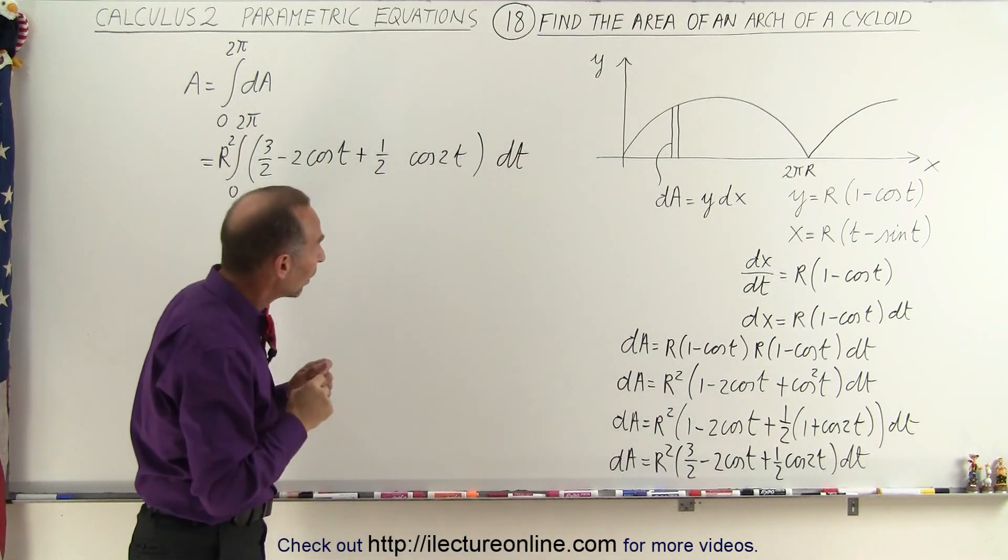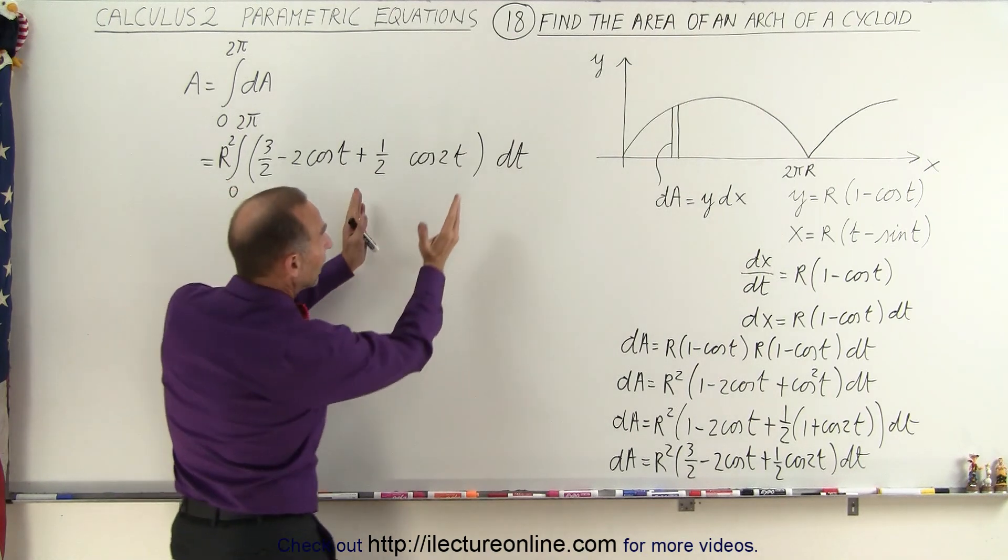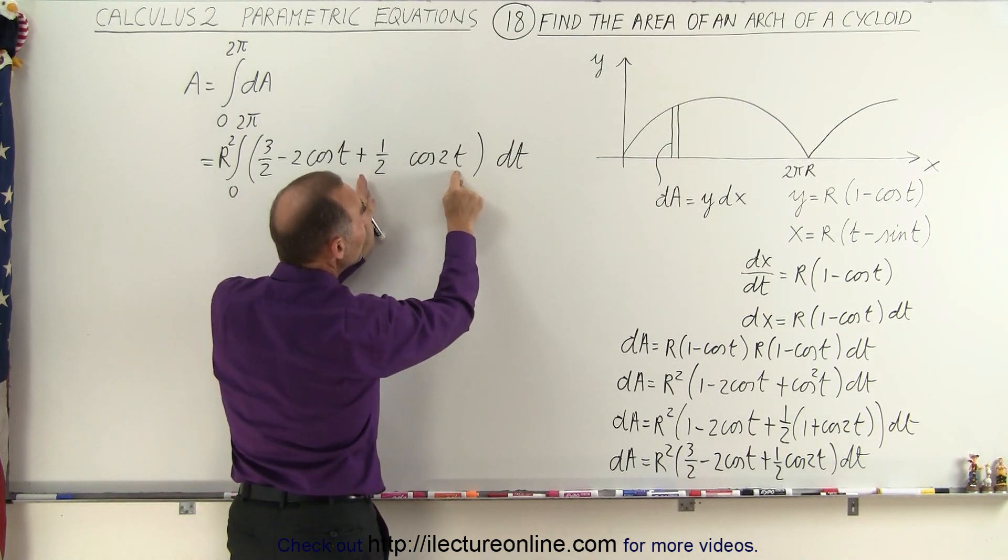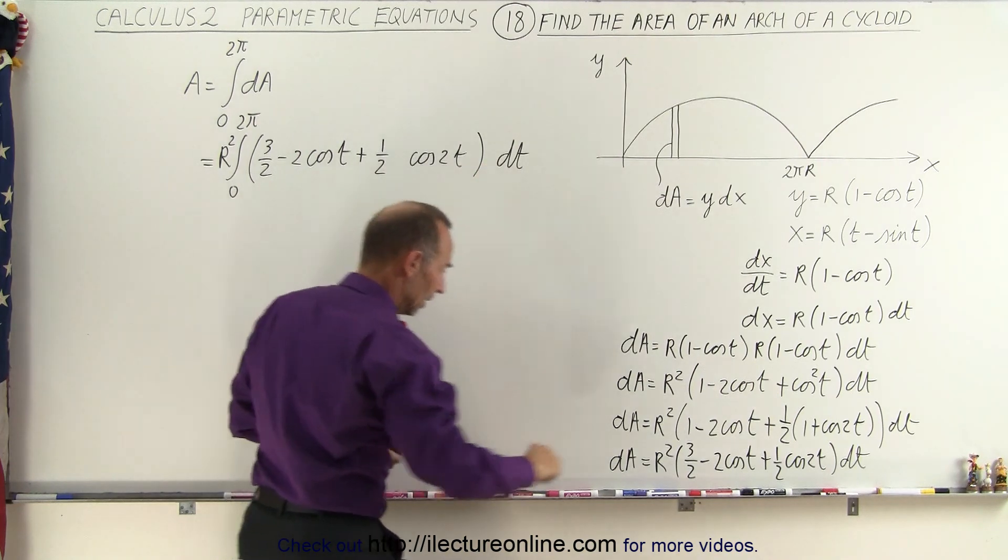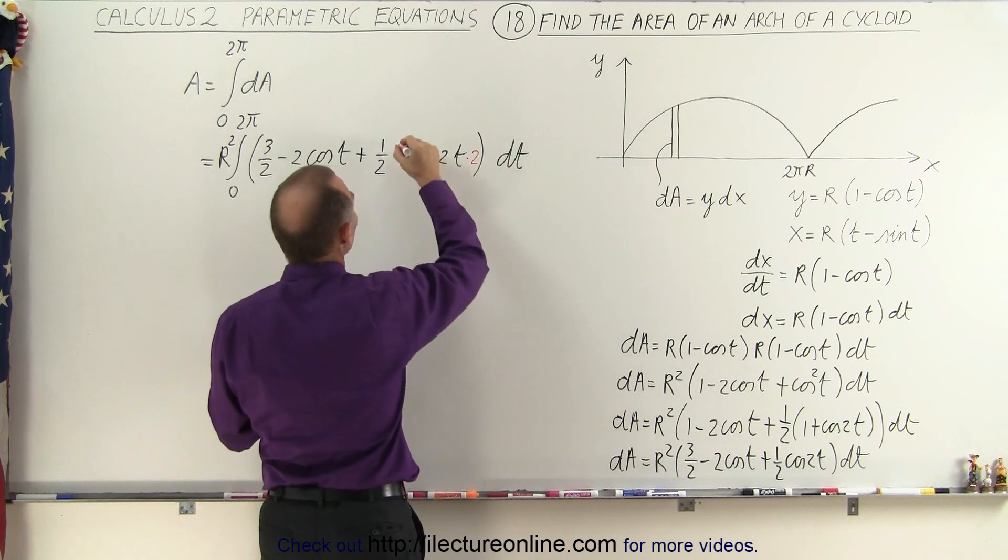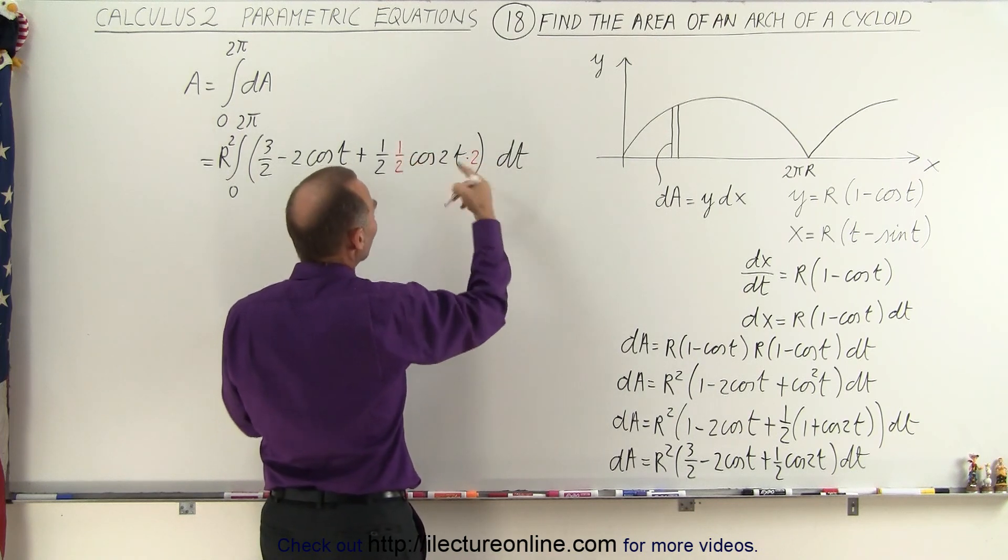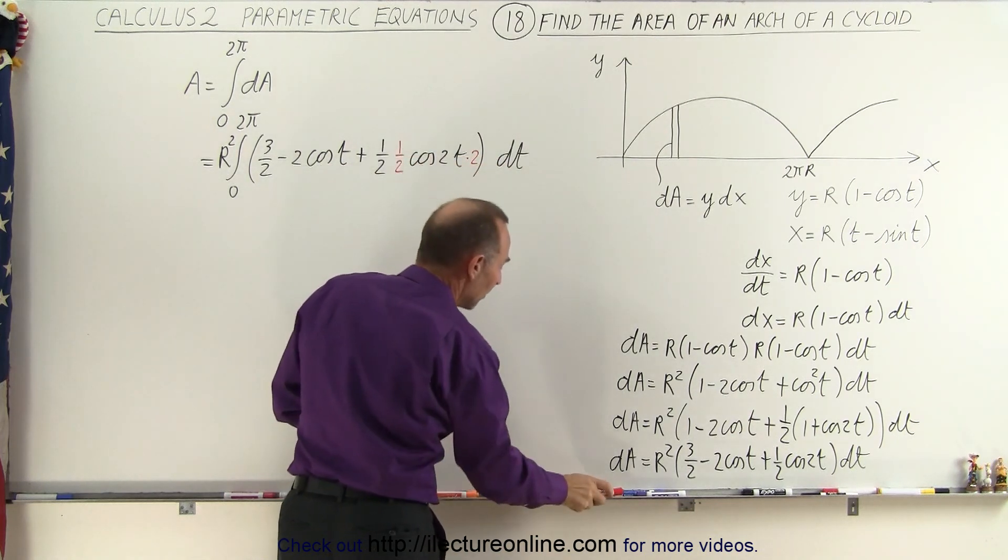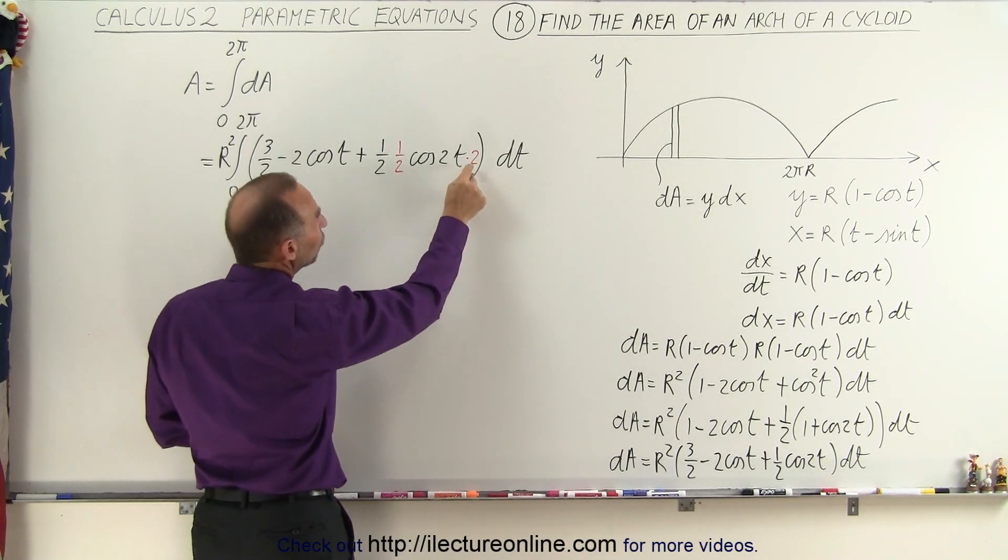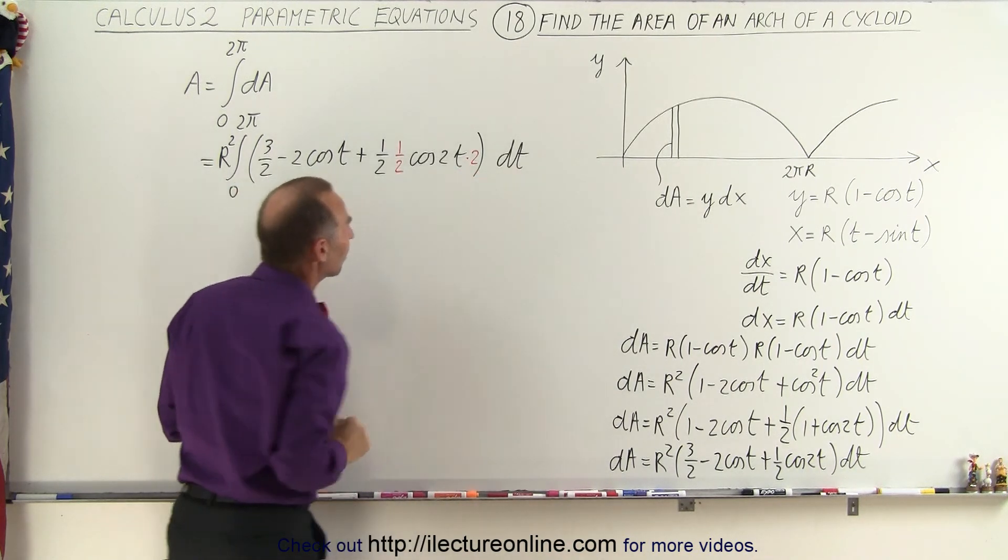Now we need to make one little adjustment because if we're going to integrate this portion of the integral we have a cosine of 2t which means we need a 2 dt. So we need to multiply this times 2 and also divide by 2. So one half times 2 is 1, so we negate it that way, but at least in this case when we integrate this we have the cosine of 2t times 2 dt.